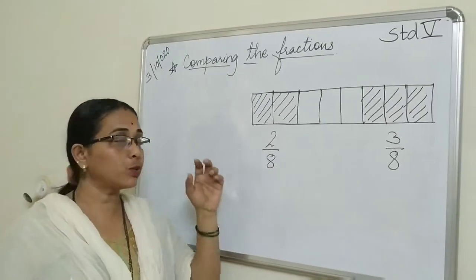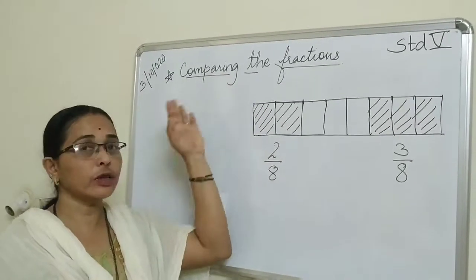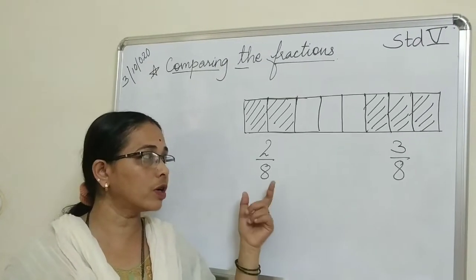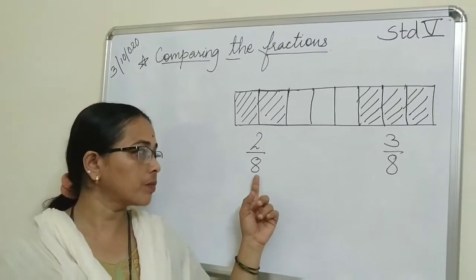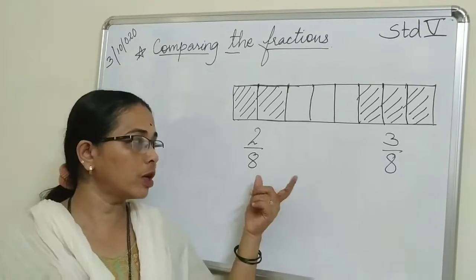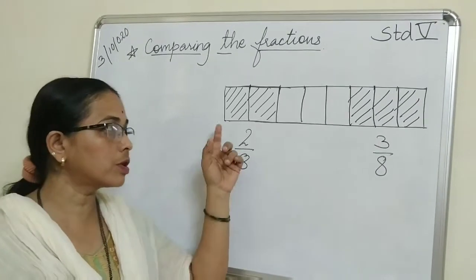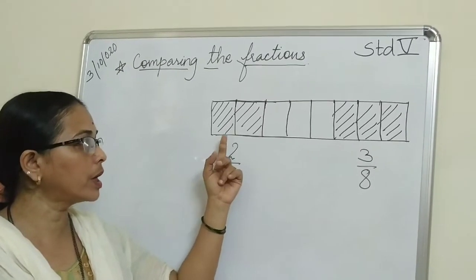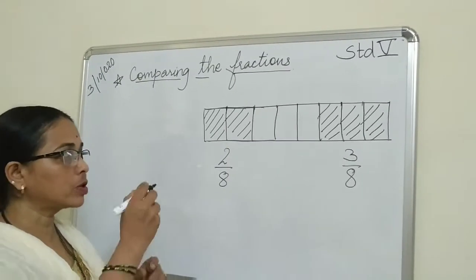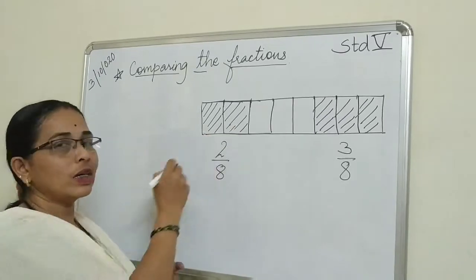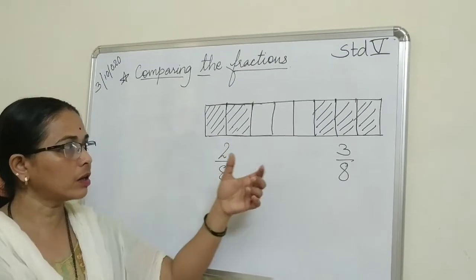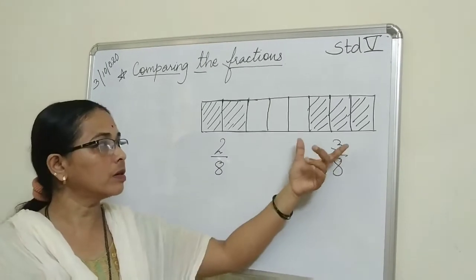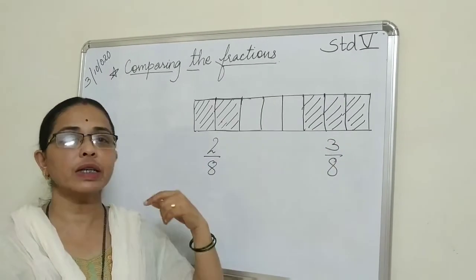Today we have to learn comparing fractions - which fraction is bigger and smaller. First we will learn comparing fractions with equal denominators. Suppose this is a ribbon strip or paper strip and you have made 8 parts of that strip. Two parts you have colored with pink color and three parts you have colored with green color. So which part is bigger here?